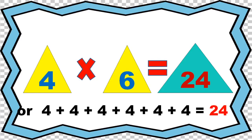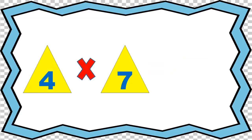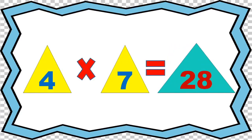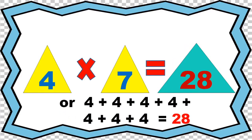4 times 6 equals 24, or 4 plus 4 plus 4 plus 4 plus 4 plus 4 equals 24. 4 times 7 equals 28, or 4 plus 4 plus 4 plus 4 plus 4 plus 4 equals 28.